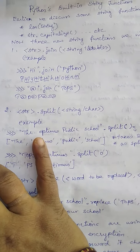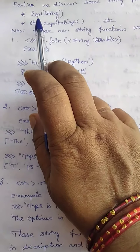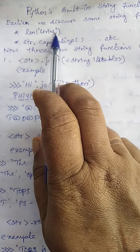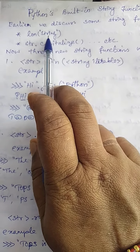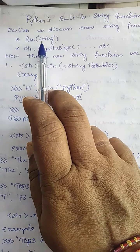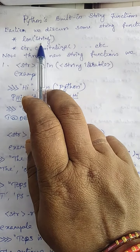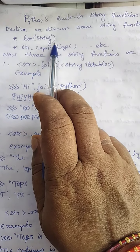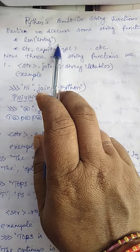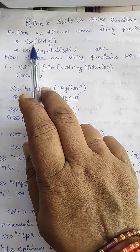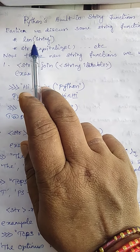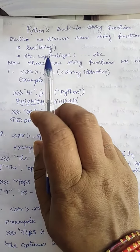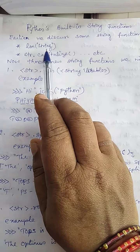Now we will discuss this. We discussed earlier about the length of a string — for example, giving 'optimus': it counts characters — o, p, t, i, m, u, s, with a space, gives eleven characters, so it returns the value eleven. Similarly, string dot capitalize will capitalize the first character of a string. These are the functions we discussed earlier.